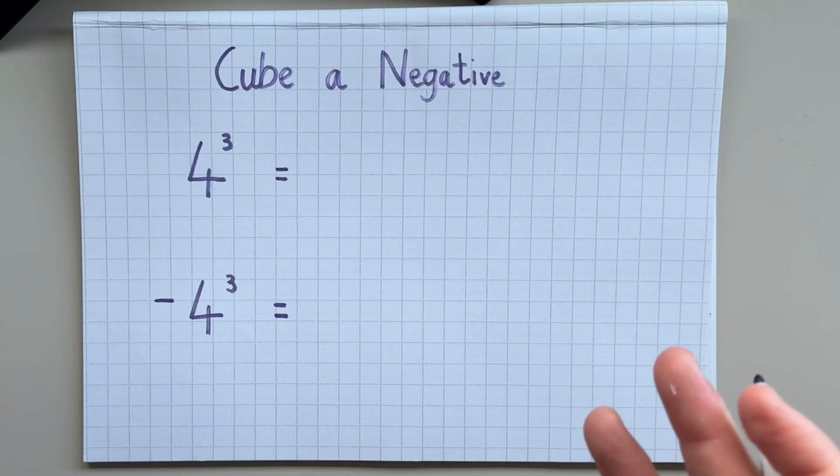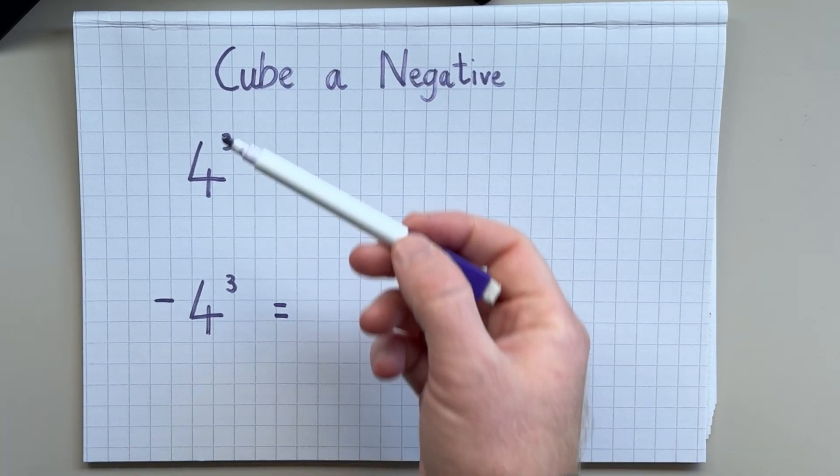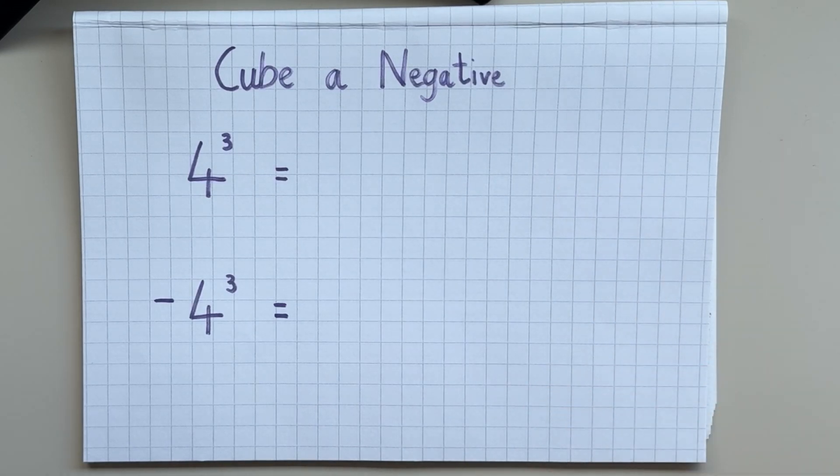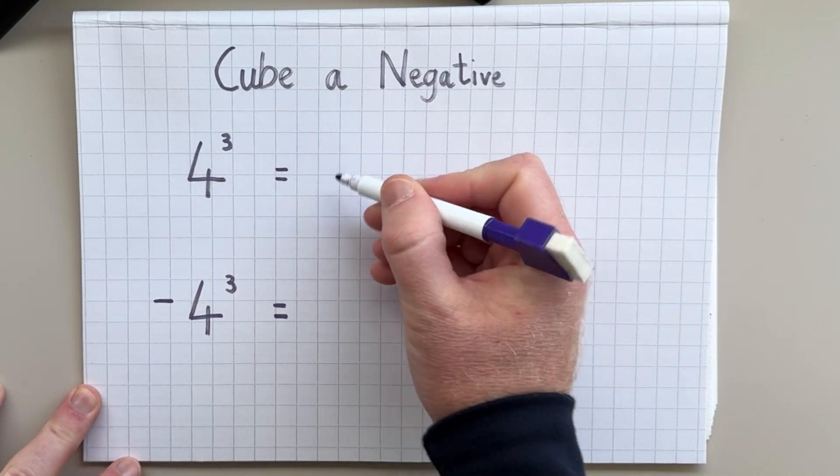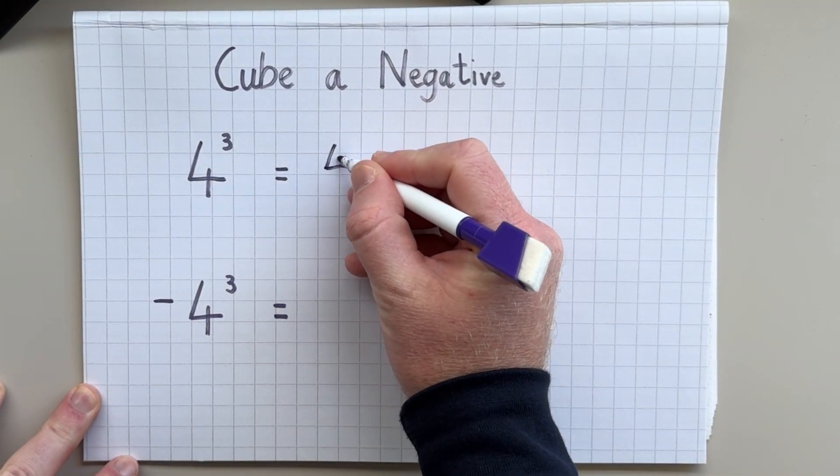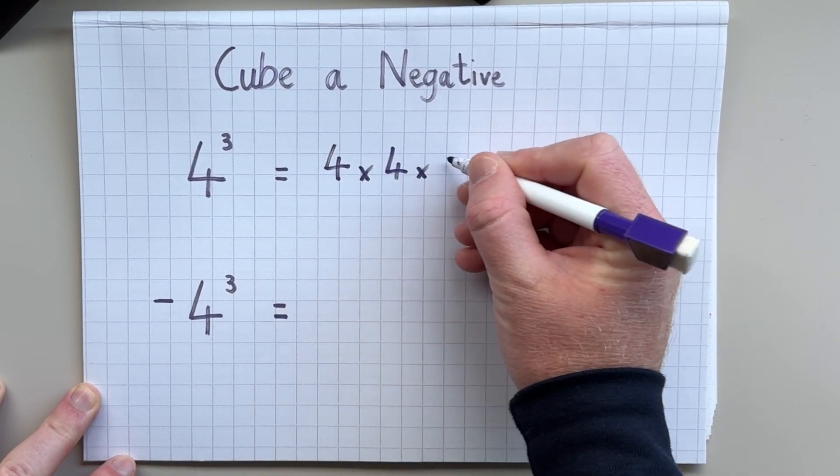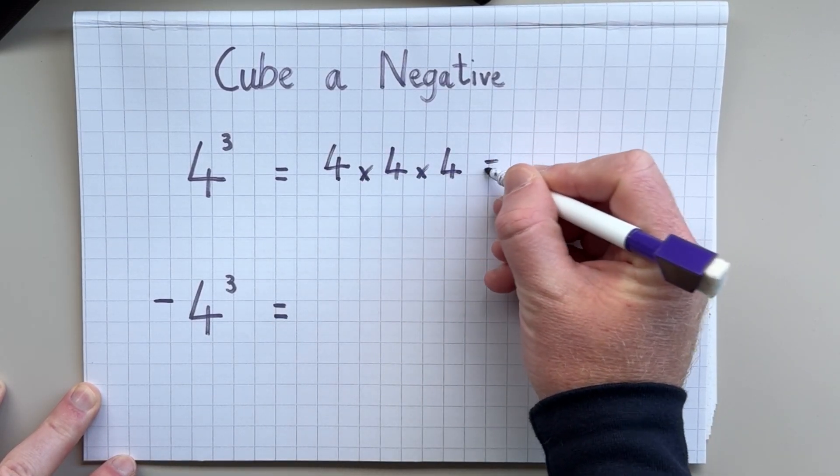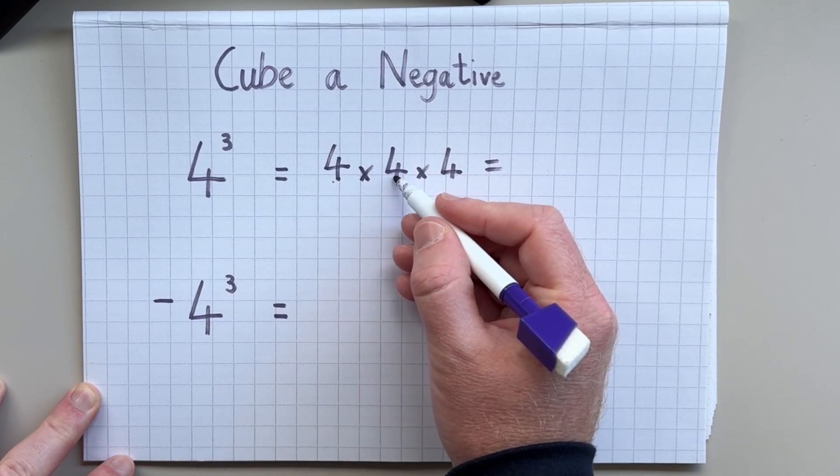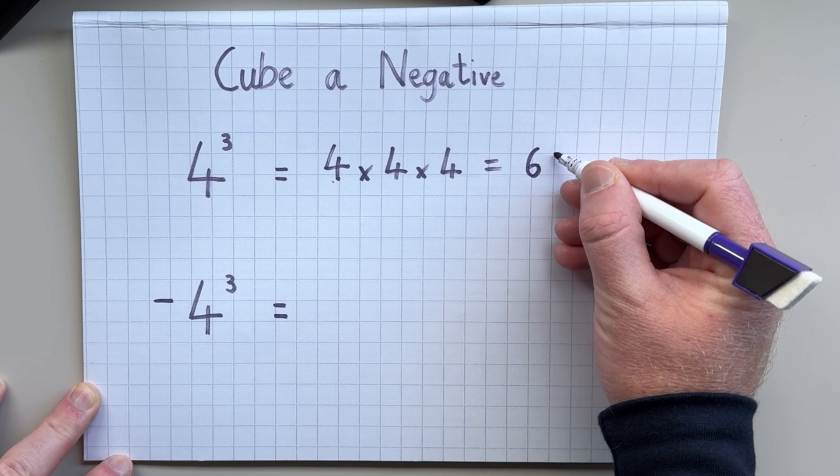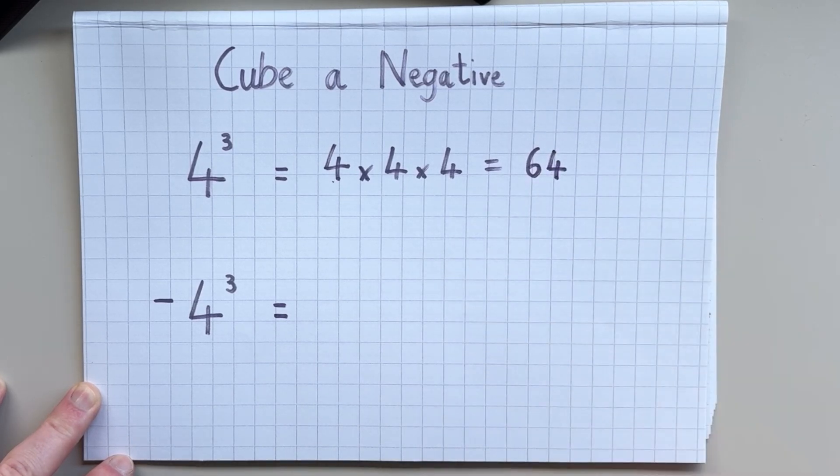Now we're going to investigate what happens when we cube a negative number. It's completely different to what happens when we square a negative number. So here we have 4 cubed. Nice and easy. Which just means 4 times 4 times 4. 4 times 4 is 16. And then 16 times 4 gives us an answer of 64.